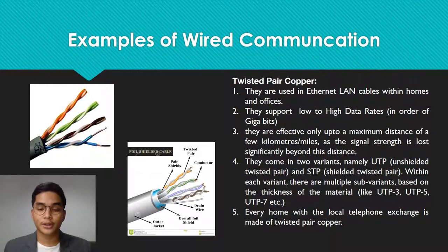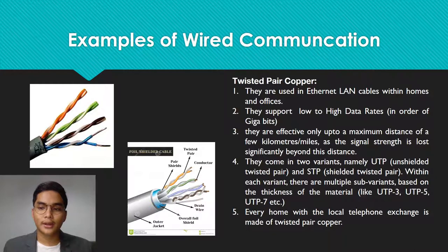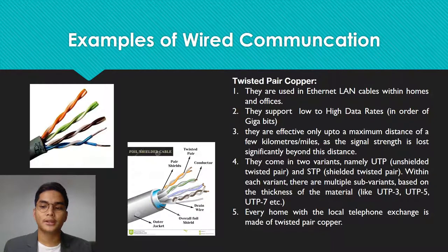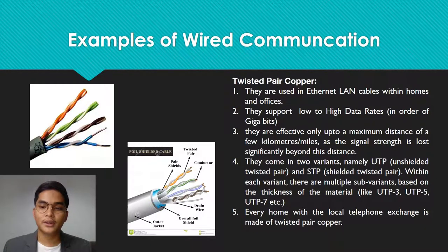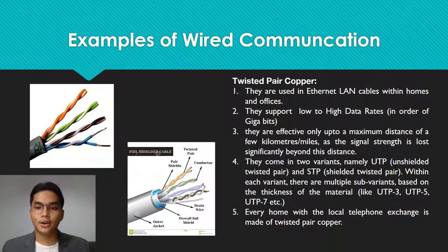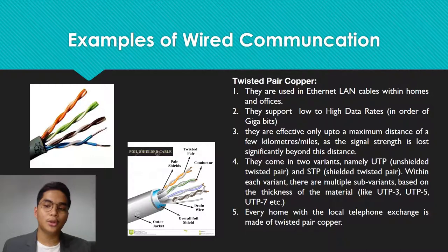Examples of wired communication: first, twisted pair copper. They are used in ethernet line cables within homes or an office. They support low to high data rates in the order of gigabytes. They are effective only up to a maximum distance of a few kilometers or miles, as the signal range is lost significantly beyond this distance. They come in two variants, namely UTP or unshielded twisted pair.